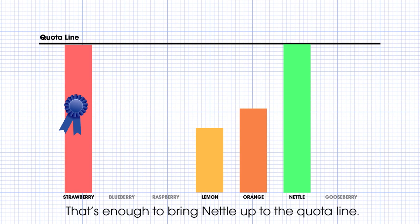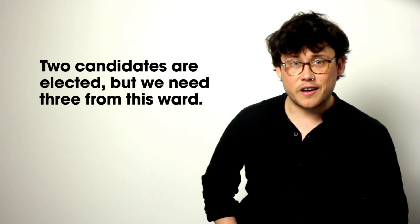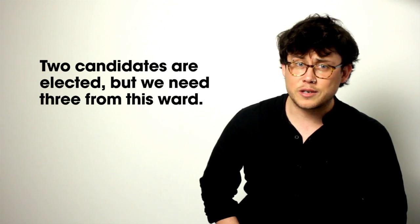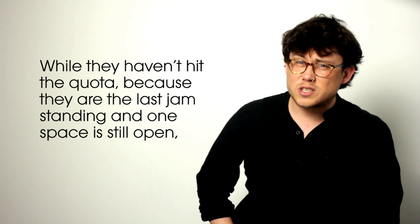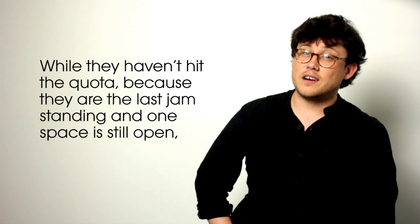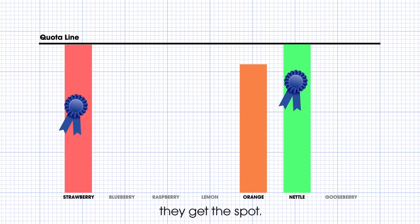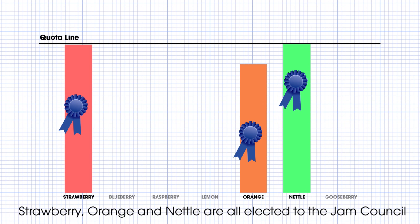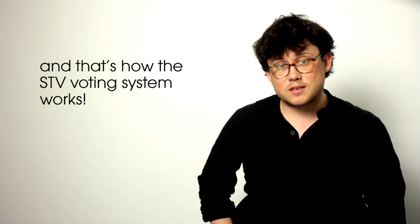And what do you know, that's enough to bring Neto up to the quota line. Two candidates are elected, but we need three from this ward. Lemon is eliminated next, leaving only orange. Well, they haven't hit the quota, but because they are the last jam standing and one space is still open, they get the spot. So there it is — Strawberry, Orange, and Neto are all elected to the Jam Council, and that's how the STV voting system works.